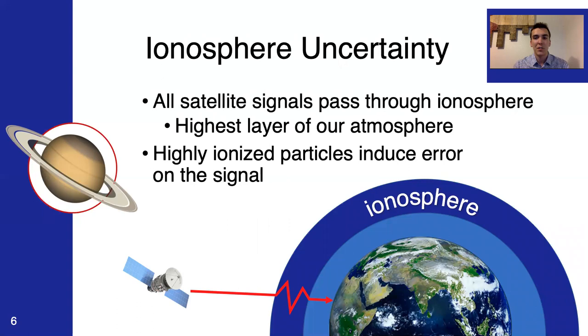The ionosphere is the uppermost region of our atmosphere where all satellite signals must pass through. The sun will ionize the particles in the ionosphere, hence the name, which induces noise or error on your signal. So, a better understanding of the ionosphere will help us predict this noise and hopefully get rid of it for more accurate communications for satellites, for GPS tracking, etc. There's a lot of applications here.